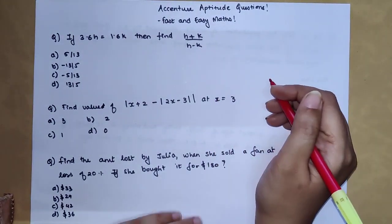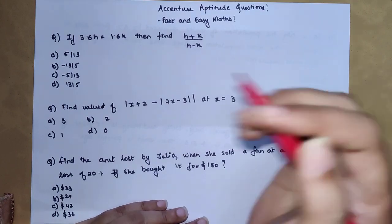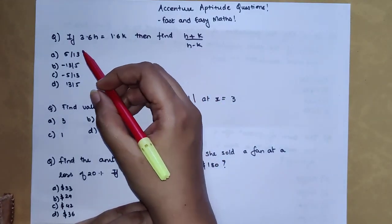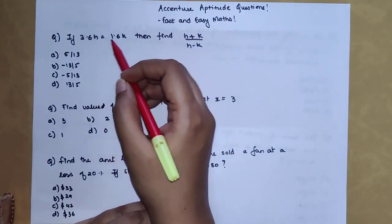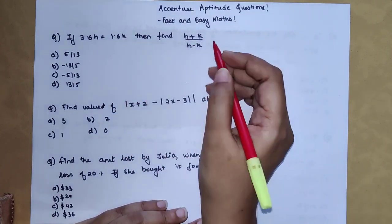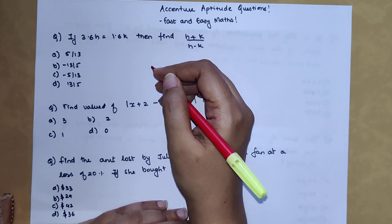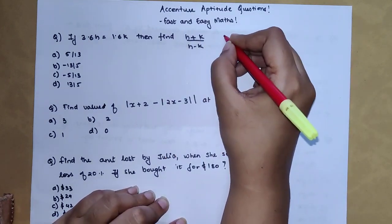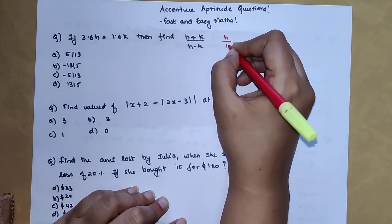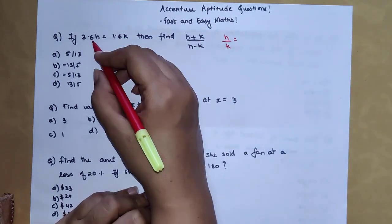The first question given here is: If 3.6h equals 1.6k, then find (h+k)/(h-k). Very quickly, in such a case we'll find out what is h/k. In order to find h/k, we will have to shift 1.6 and 3.6 to the denominator.